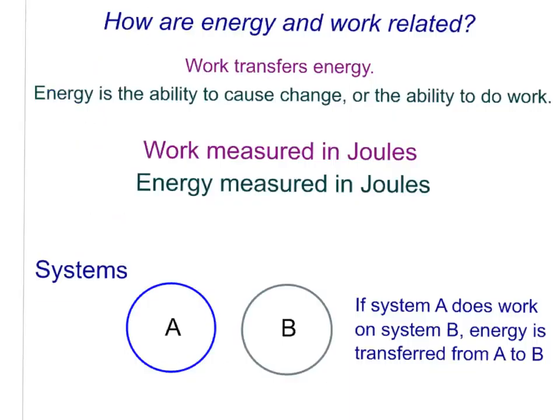Let's take a look at how energy and work are related. When that bat applies a force to that ball through a distance, work is being done on the ball. Also, energy is being transferred to that ball. So we can think of work as a transfer of energy. Work transfers energy. Remember, work equals force times distance.